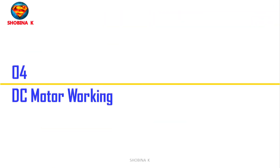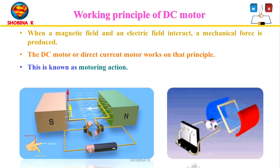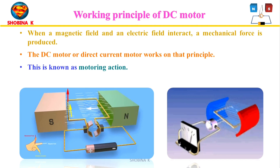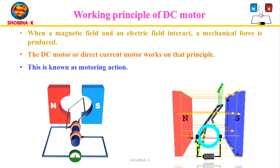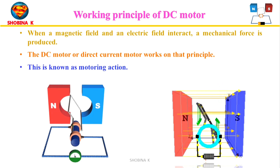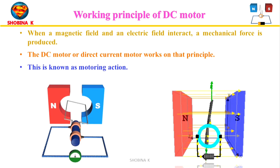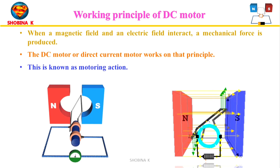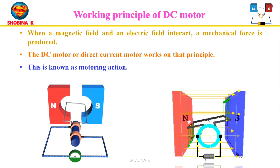A DC motor is an electrical machine which converts electrical energy into mechanical energy. When a current carrying conductor is placed in a magnetic field, it experiences a torque and has a tendency to move — that is, it experiences a mechanical force. When a magnetic field and an electric field interact, a mechanical force is produced, and the DC motor works on this principle, which is known as motoring action.